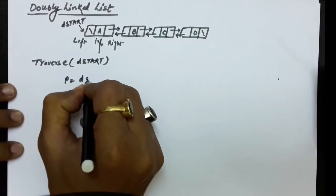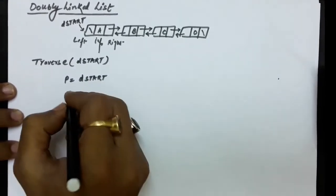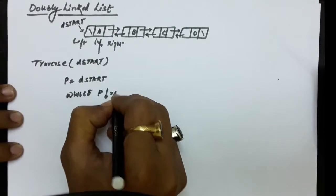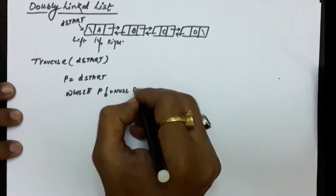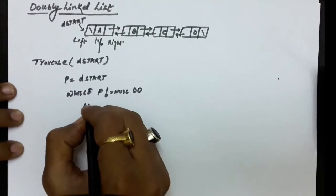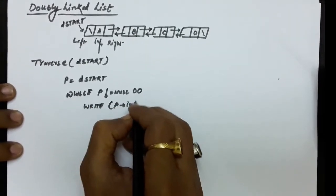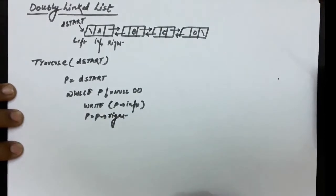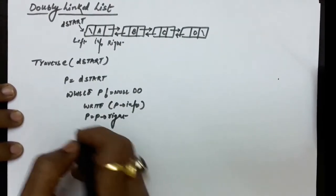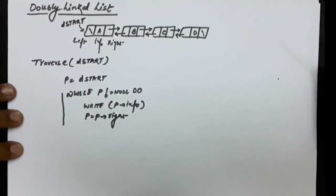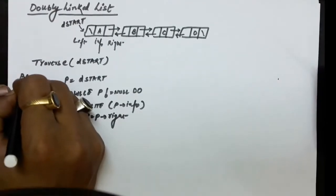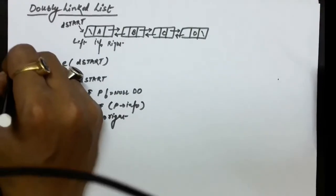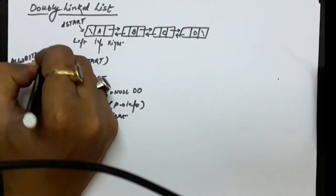Set P equals to D_start. By the time we have nodes in the linked list, we keep traversing. The moment P becomes null, we stop. We write the information of the P node and then move right by P equals to P dot right. We again print the information of the next node and so on. Once all linked list nodes are finished, we finish the traverse operation. This is the traversal algorithm.